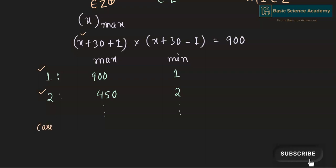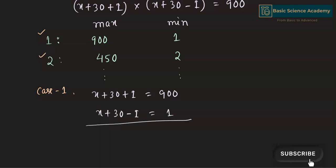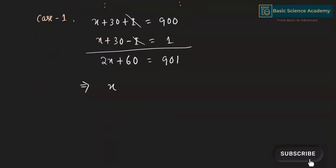In the first case, x + 30 + i = 900 and x + 30 − i = 1. Adding the two equations gives 2x + 60 = 901, so x = (901 − 60) / 2 = 420.5, which is not an integer. Hence we can neglect the first case.